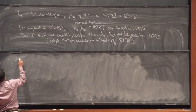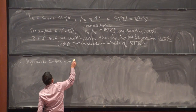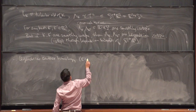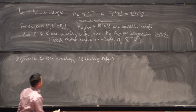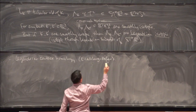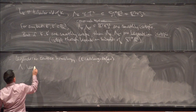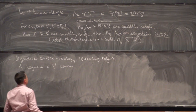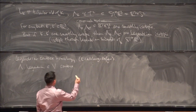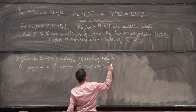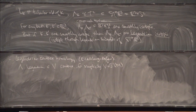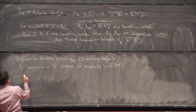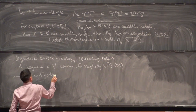To set up Legendrian contact homology, I'll give this as brief a treatment as I can. This is due to Eliashberg and Hofer. The setup is a little more general than what I'll actually apply it to. Suppose Lambda is a Legendrian submanifold inside of a contact manifold V, and just to make life easy, assume the contact manifold has no closed Reeb orbits. One-jet spaces are contact manifolds, and the co-sphere bundle of R³ is the one-jet space of S², so that falls into this category.